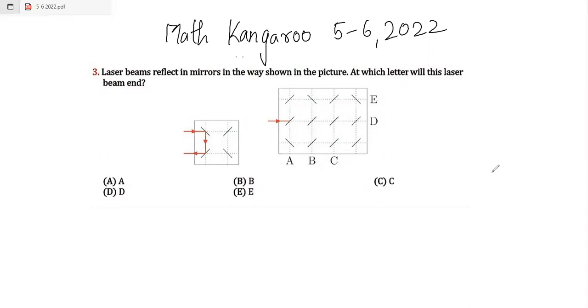At which letter will this laser beam end? So this is a picture. If it's going here, it's reflecting here. They're asking about the reflection of different mirrors placed at different angles. At which letter will this laser beam, which is entering from here, end?